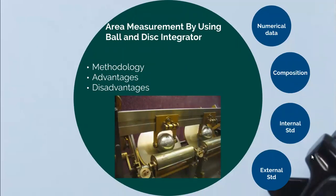Area measurement by using a ball and disc integrator: this is the most widely used device for measuring the area under the curve in chromatography. This device is present as a built-in device in the chromatograph. Its main advantage is that it provides a higher degree of automation and relatively higher accuracy compared to all the techniques discussed so far. This technique can also be used for skewed peaks. Other more modern methods used for quantification are digital or electronic integrators and computers.